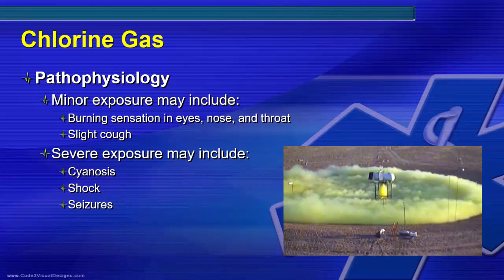Chlorine gas is extremely irritating to all mucous membranes. When it comes in contact with moisture on those surfaces, it can form hydrochloric acid and other substances damaging to human tissue. More intense exposure causes chest tightness, choking, paroxysmal cough, headache, nausea, vomiting, and diffuse wheezing. Patients with more severe exposures may also develop cyanosis, pulmonary edema, shock, seizures, and loss of consciousness.